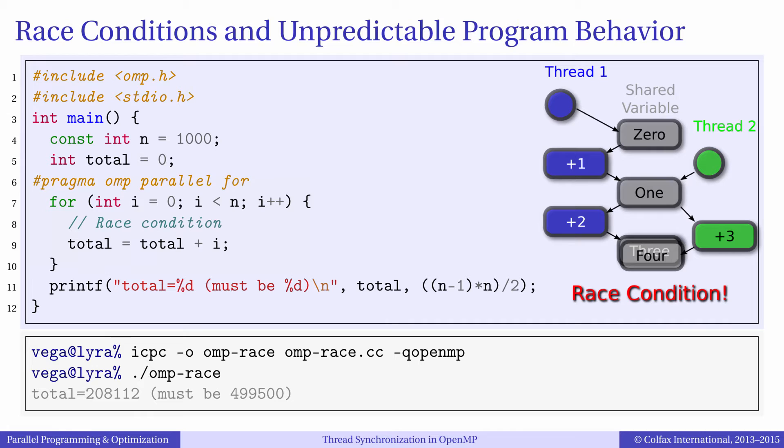This is happening because in our parallel loop we have a situation known as a race condition. The variable total is declared before the loop so it is shared. In other words, all threads access the same memory location when they modify this variable.